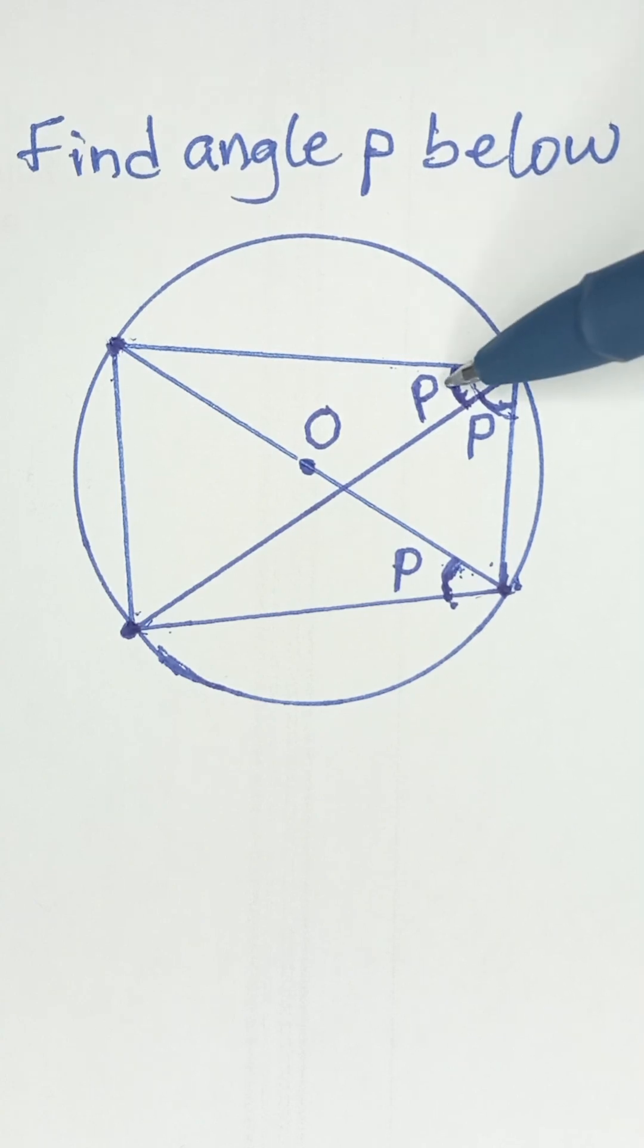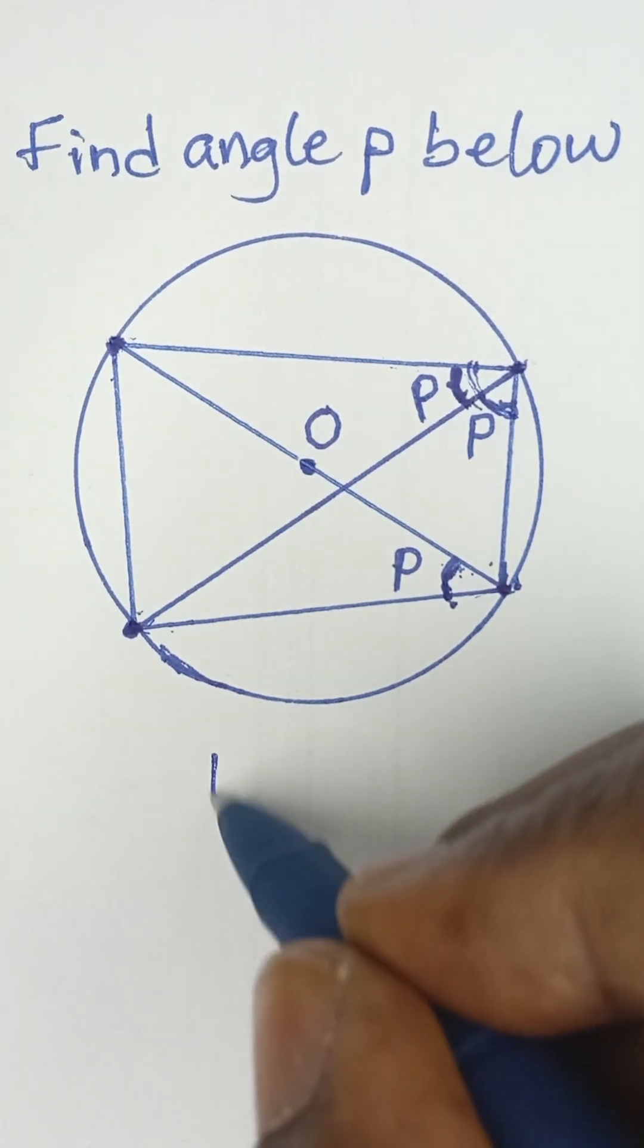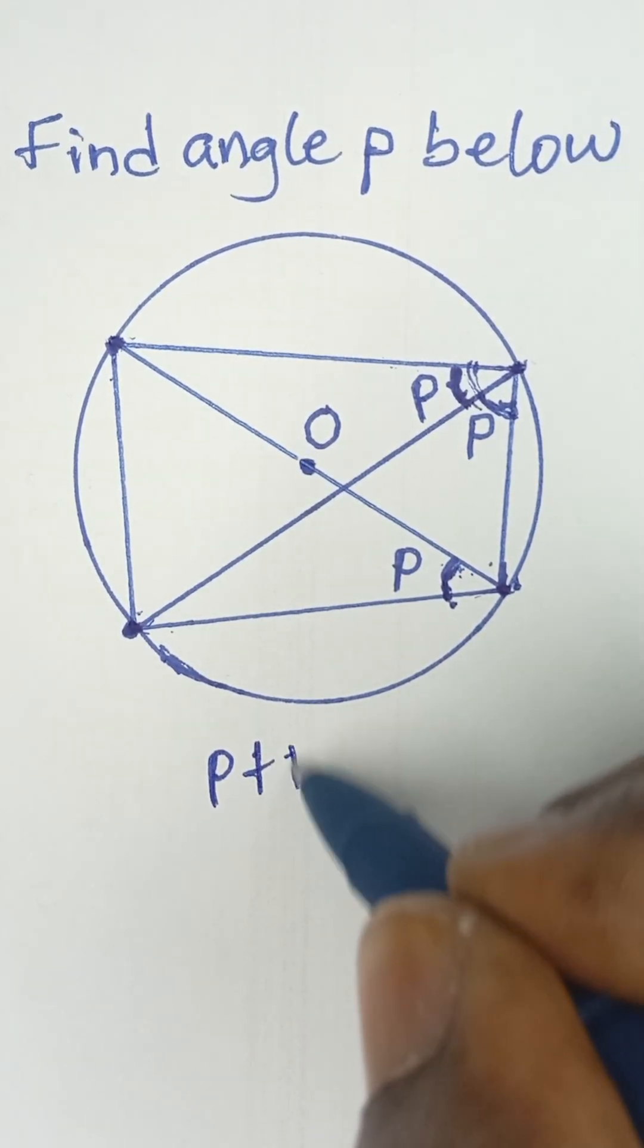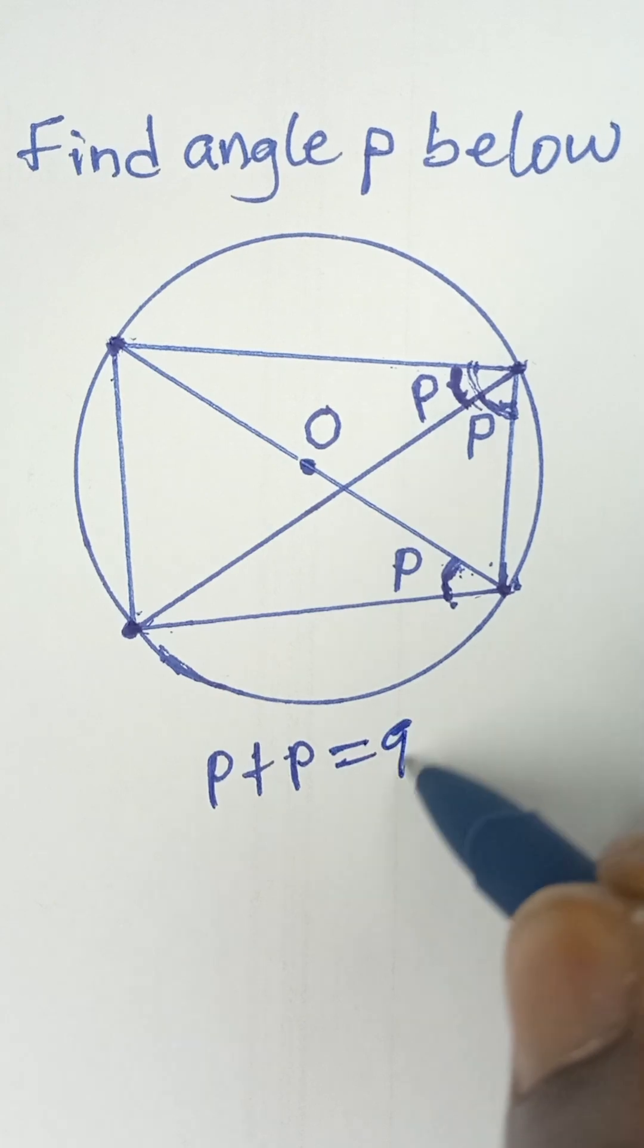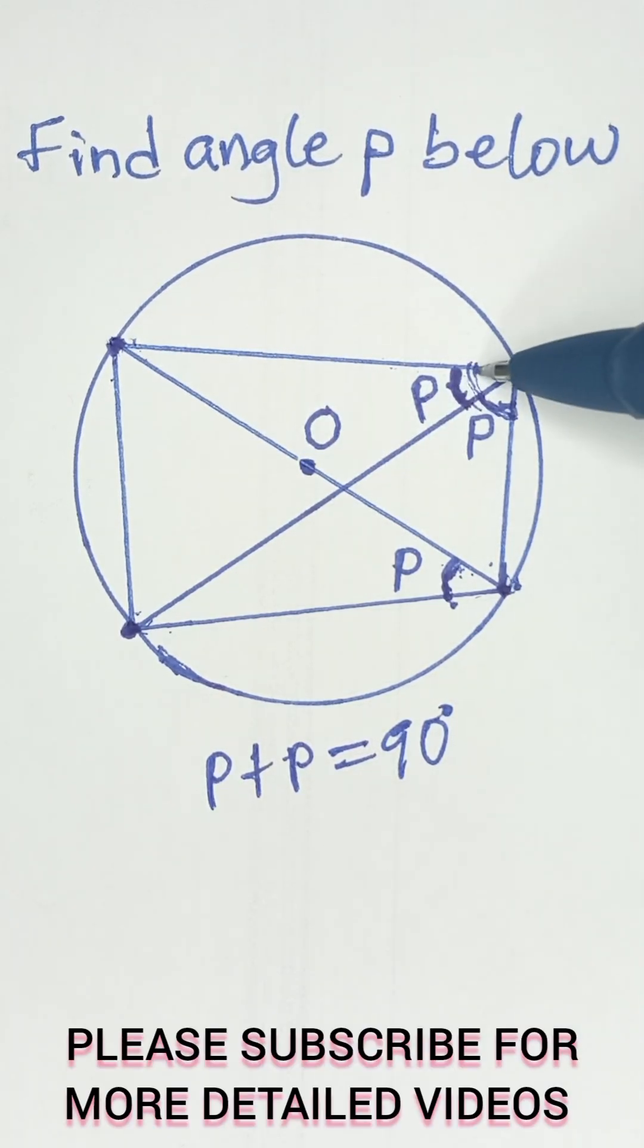So this angle is 90 degrees. So we can simply say P plus P is equal to 90 degrees. This is because angle in a semicircle is a right angle.